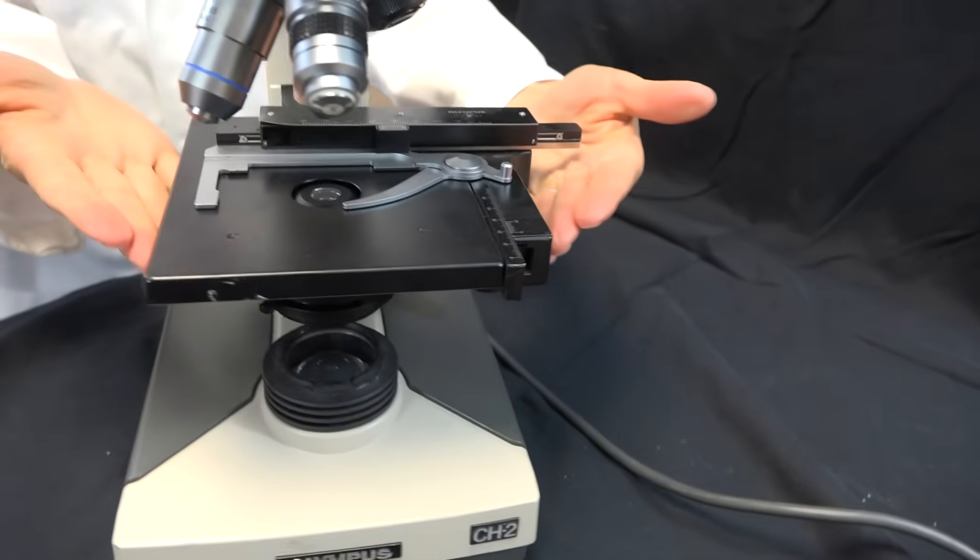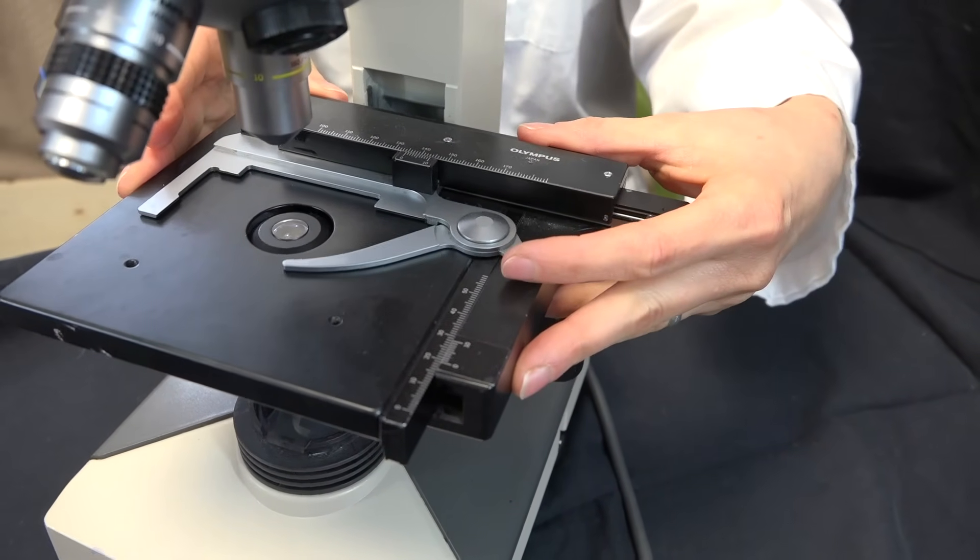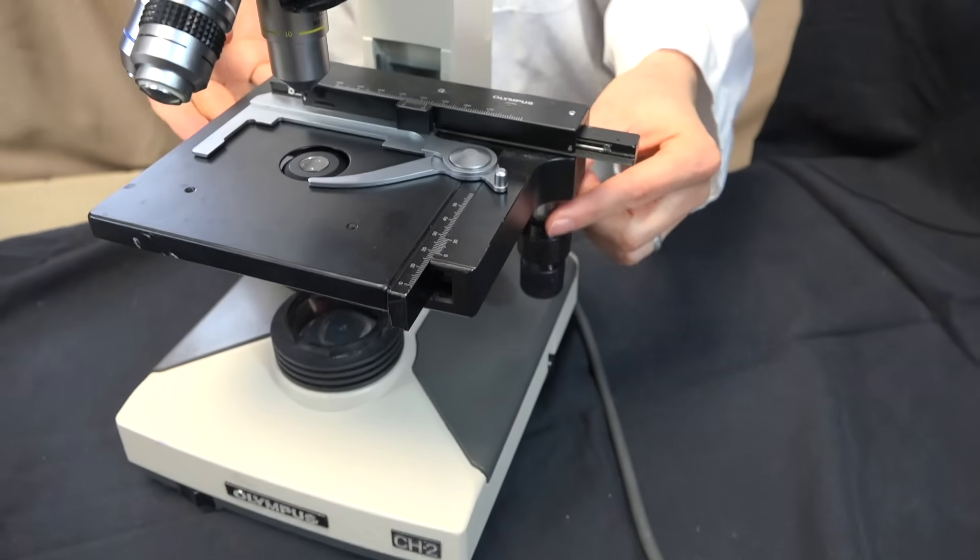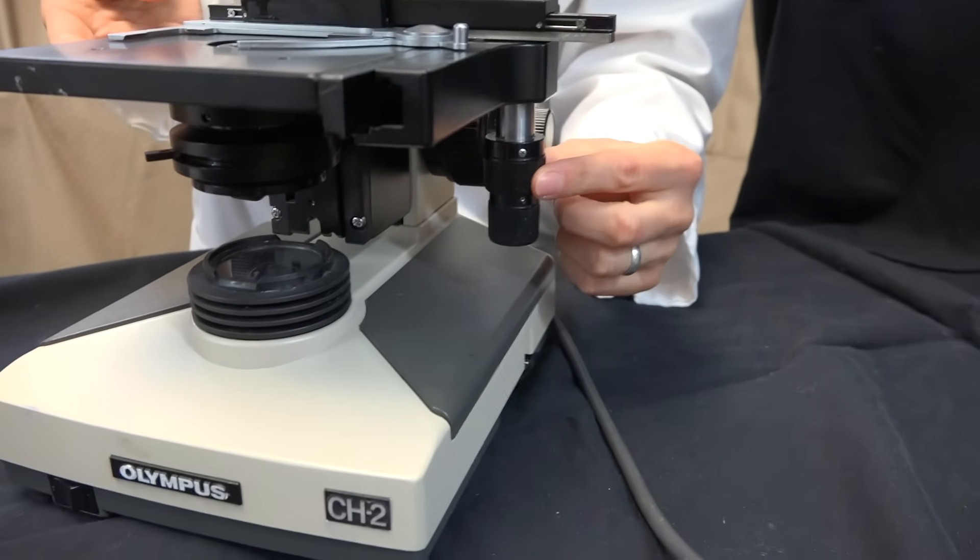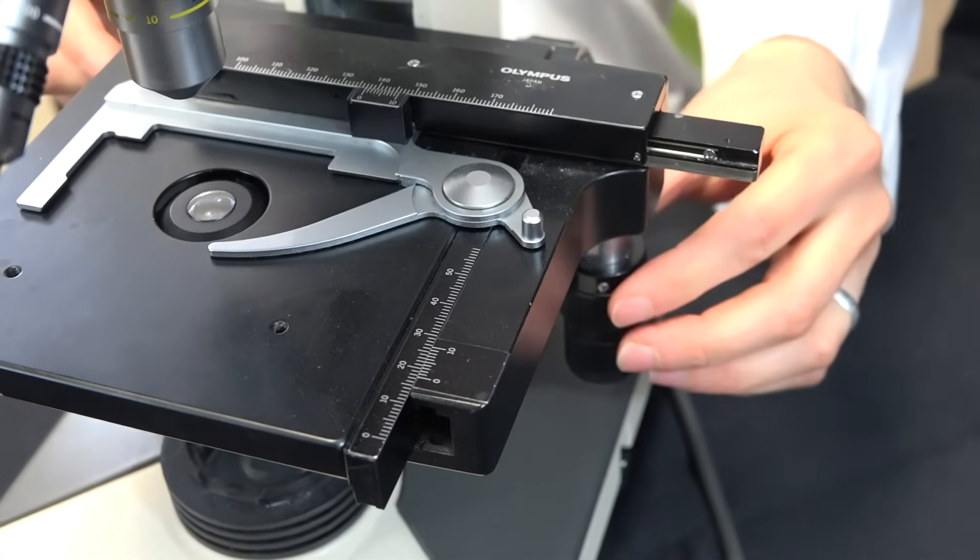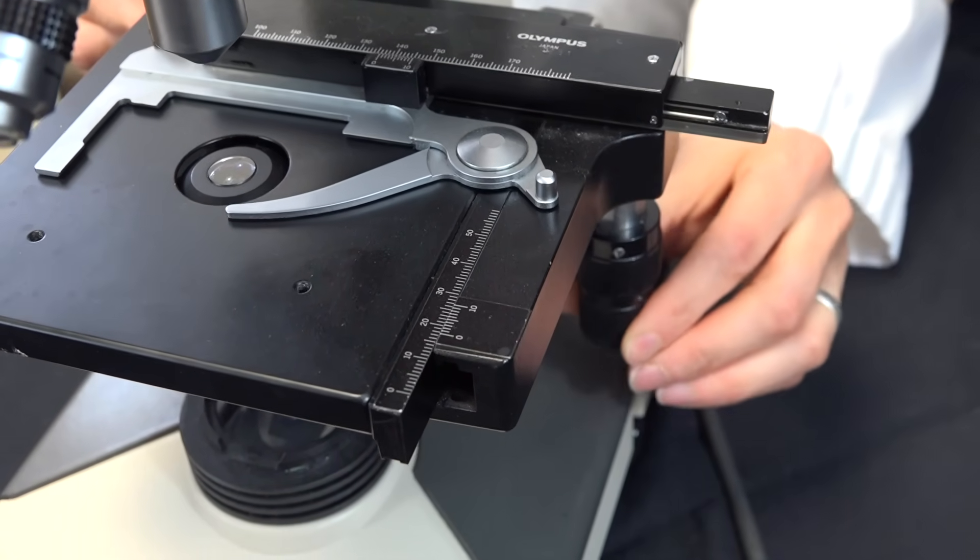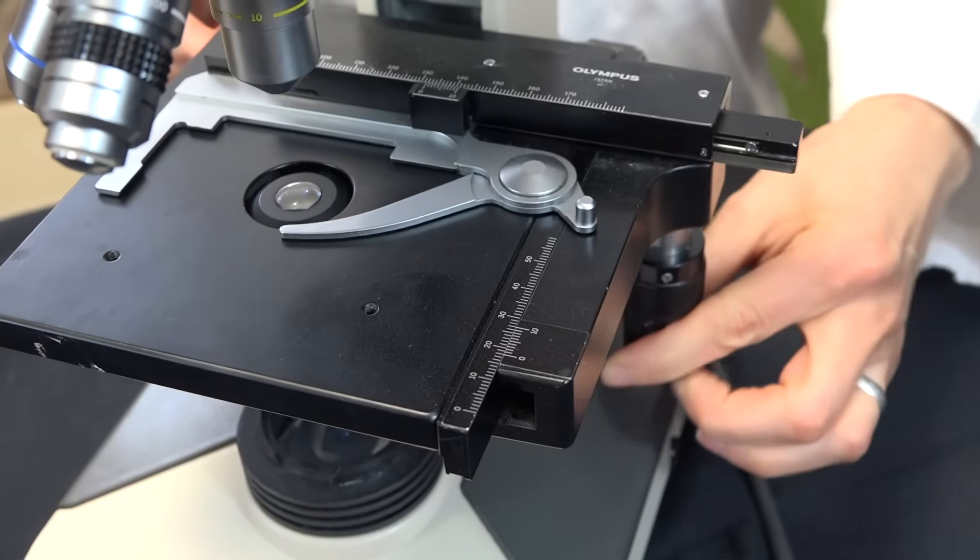Below the nose piece is the stage. On this stage there is a clamp for holding the slide. Below the stage, on one side, there are the stage moving controls. One control moves the stage back and forth. The lower control moves the stage right and left.